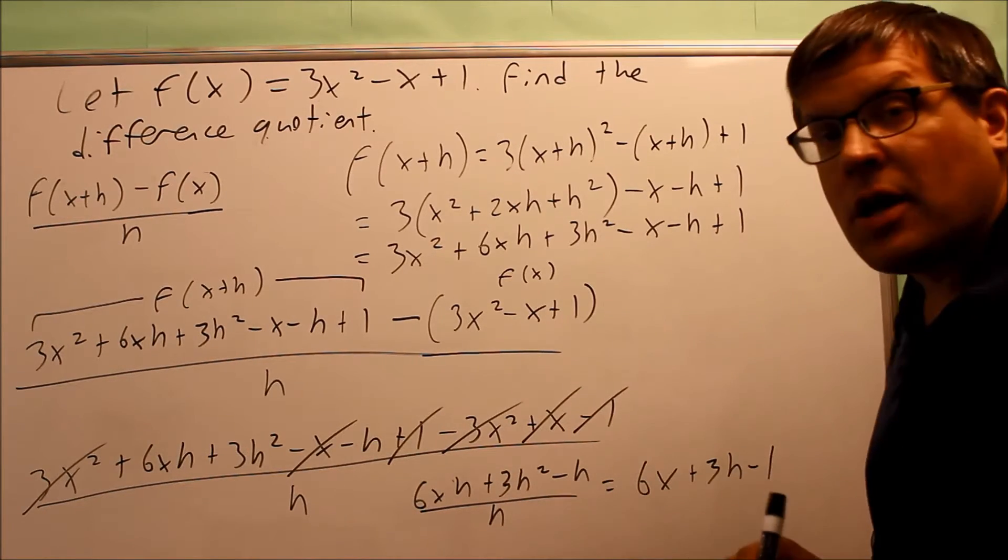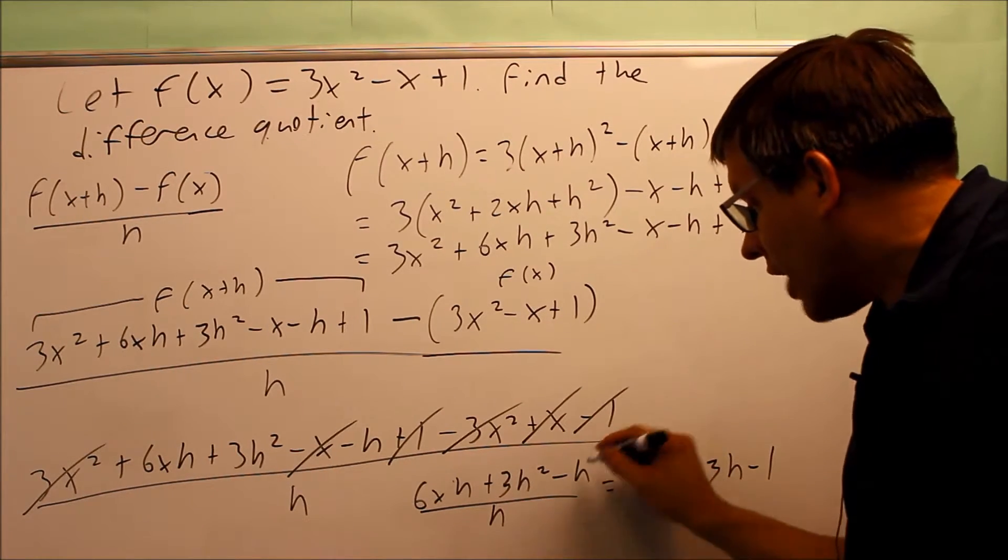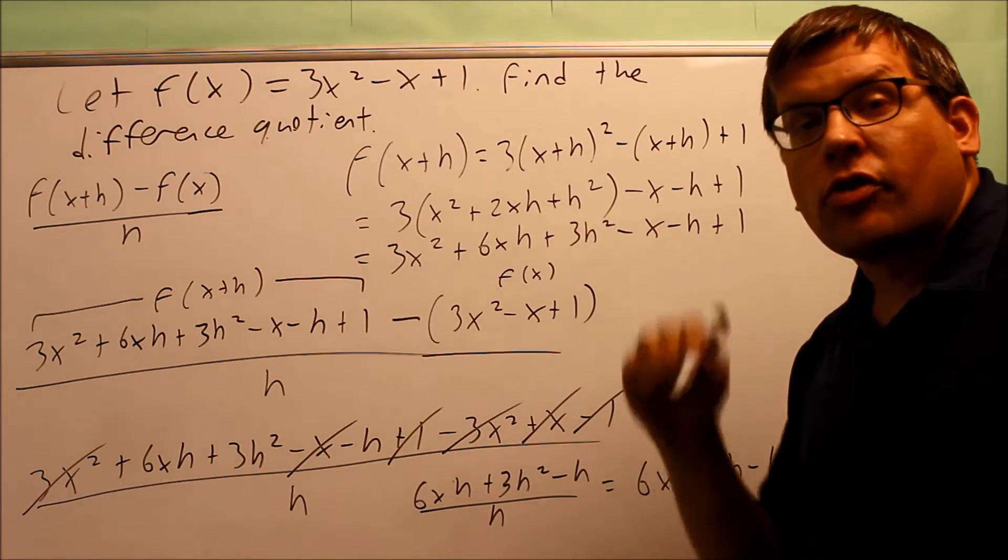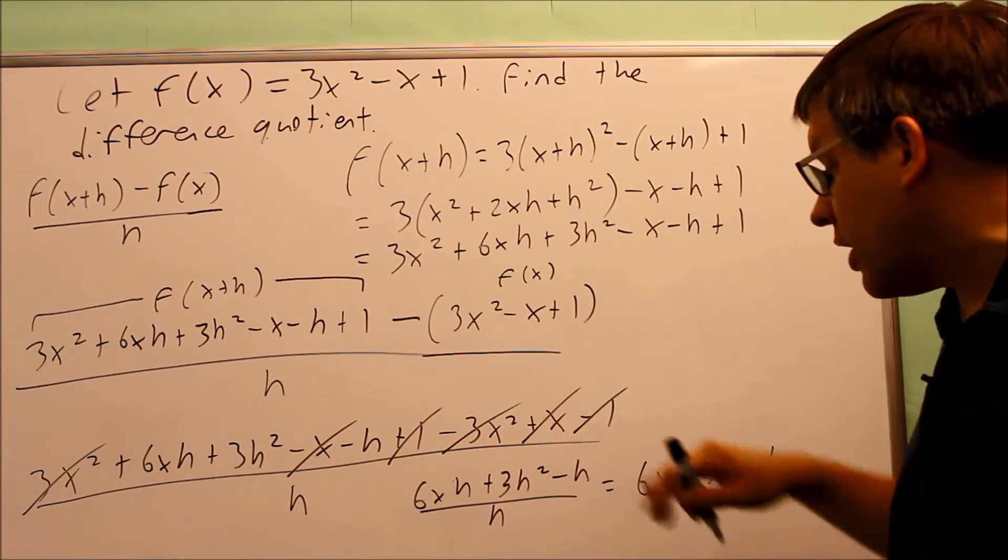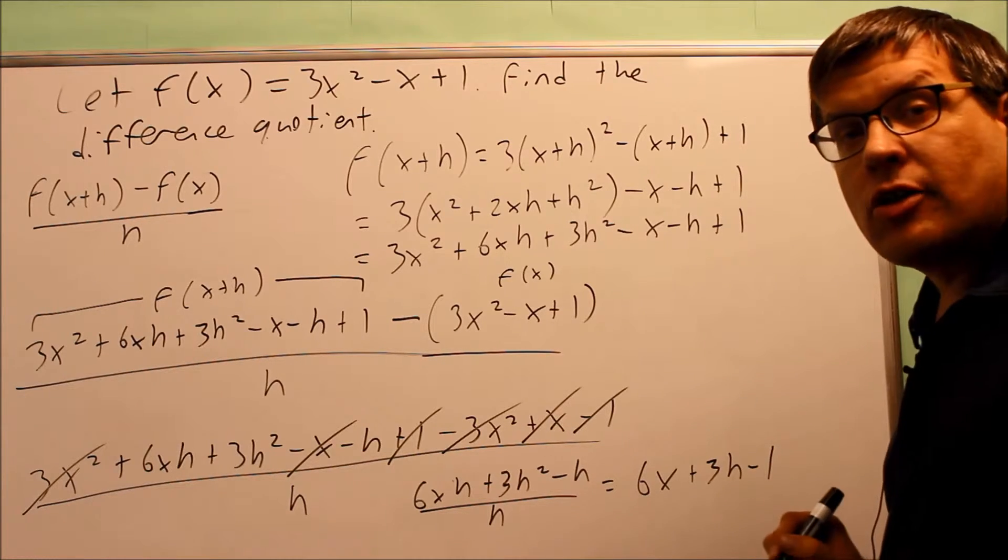Now you don't want to just cancel that out and make it 0. You have negative h over h. So h over h is actually equal to the number 1. So that's why you don't want to just drop that out. You need to have the 1 there as part of your answer.